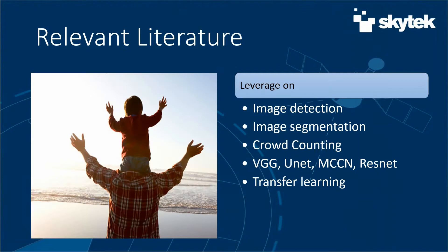We started by examining the existing literature, focusing on topics like image detection, image segmentation, and crowd counting, because there are some interesting approaches using density estimation. We examined VGG, UNET, MCCN, and RESNET models as potential candidates to use in our project.